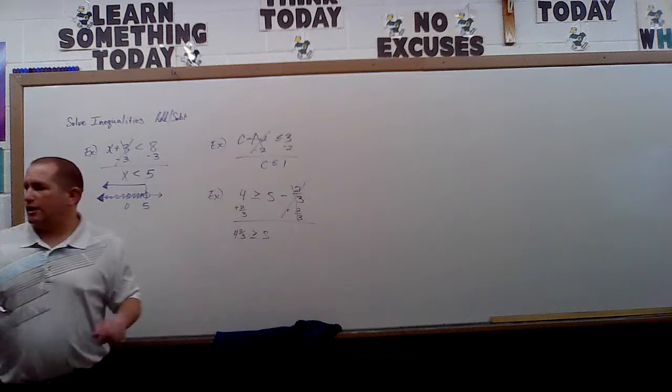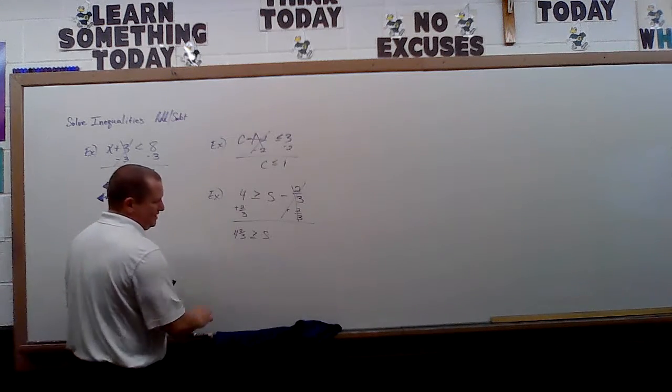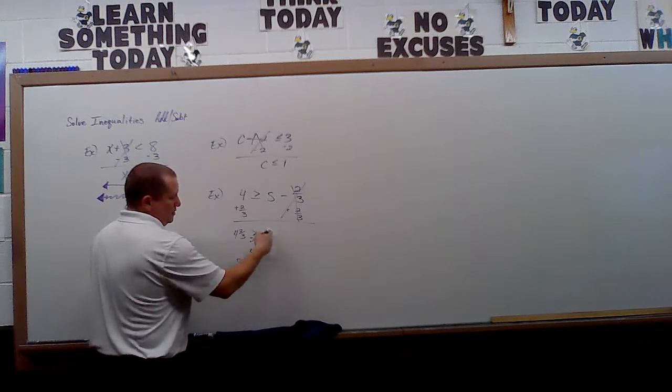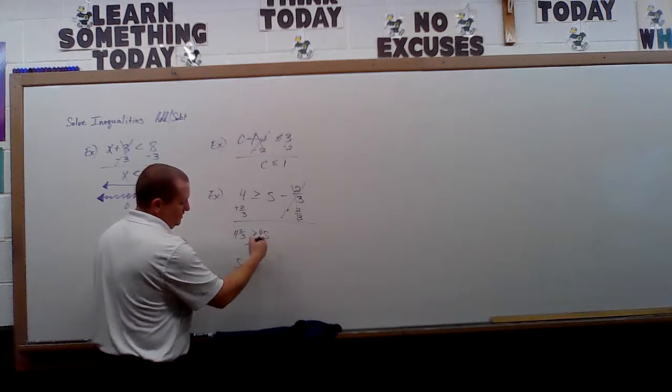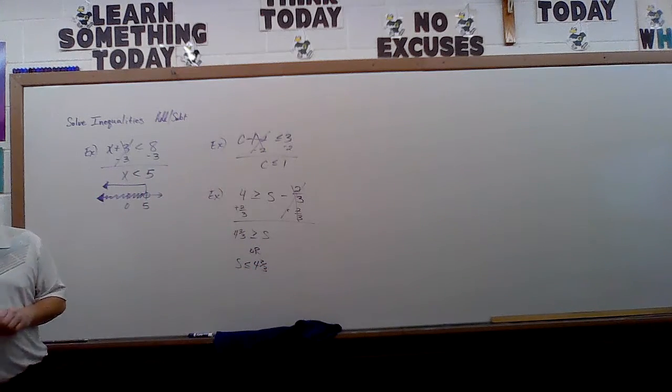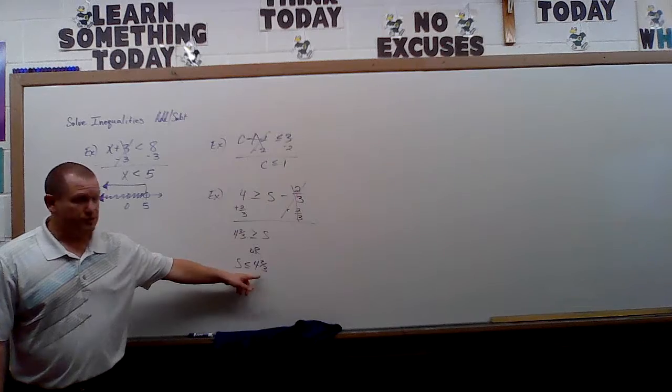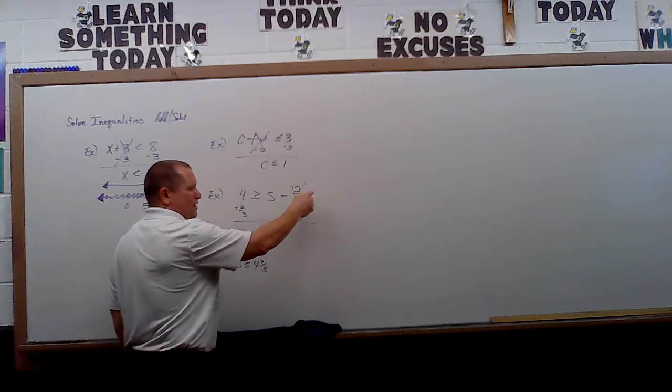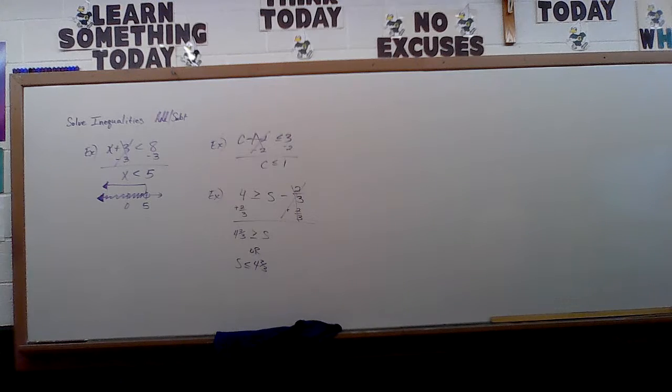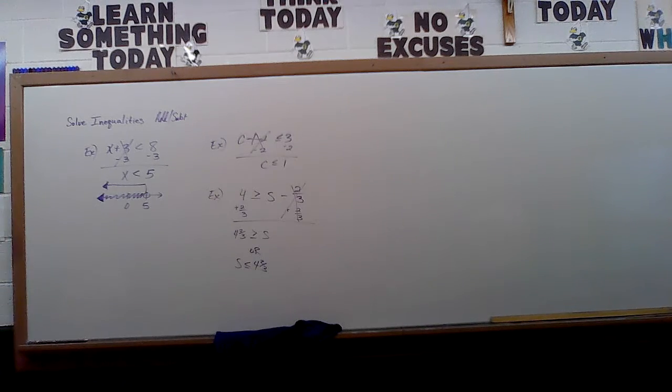Now here's another one where I want to show you, if they ask you to graph this one, I would take the time to rewrite the problem so my variable is first. But when I rewrite my inequality to turn it around, make sure it's still pointing towards four and two-thirds. So now we would have S less than or equal to four and two-thirds. So if you have a fraction today, I would highly recommend turning it into a decimal, punch it in your calculator. Then we'll get into eliminating the fractions when we get to that stage of our process.